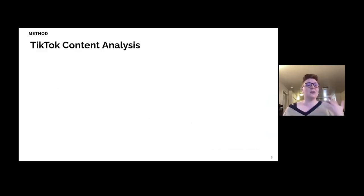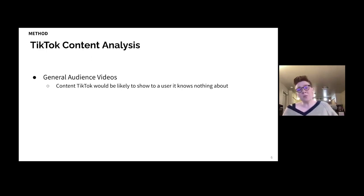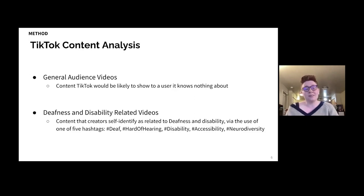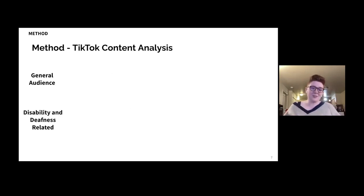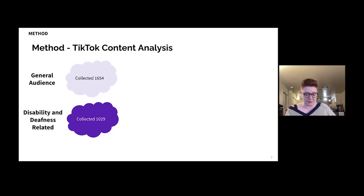For our content analysis, we identified two types of content. First, general audience videos, defined as content TikTok would be likely to show a user it knows nothing about — if you were to encounter a random TikTok video, what might its captions look like? We also wanted to learn from people making deafness and disability-related videos, defined as content that creators self-identify as related to deafness and disability via one of five hashtags: deaf, hard of hearing, disability, accessibility, or neurodiversity. We manually collected 1,654 unique general audience videos and 1,029 unique disability and deafness-related videos.